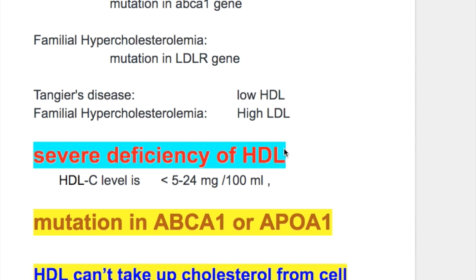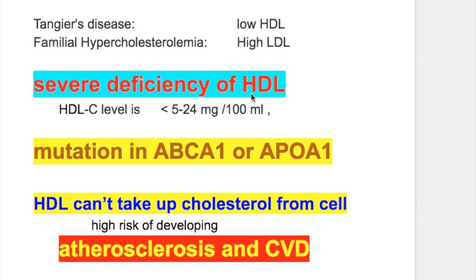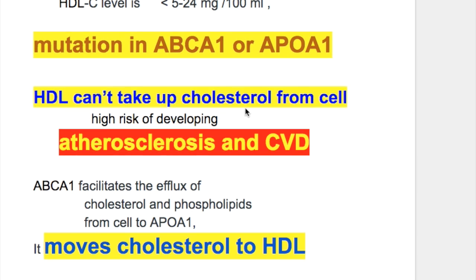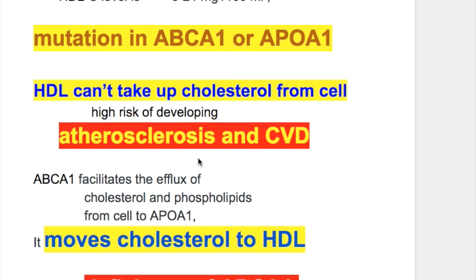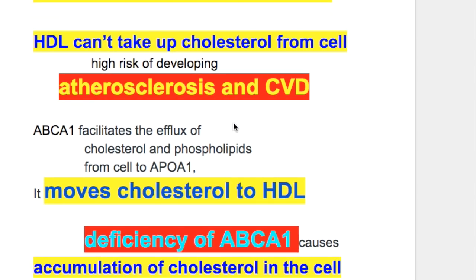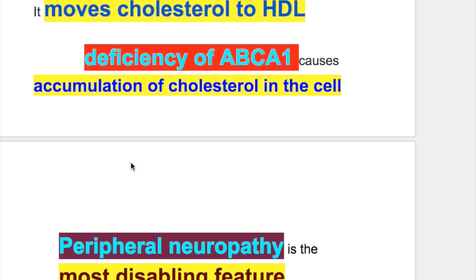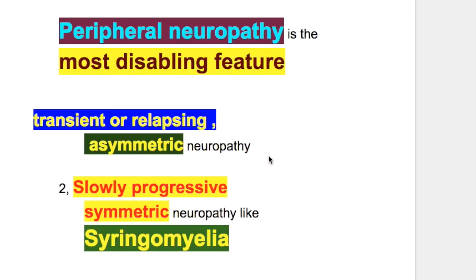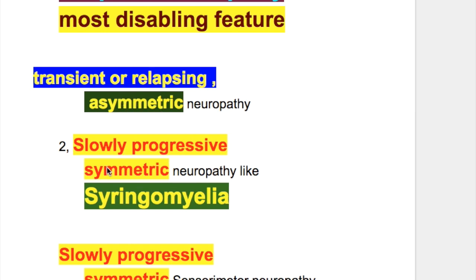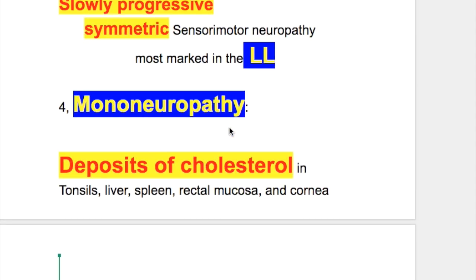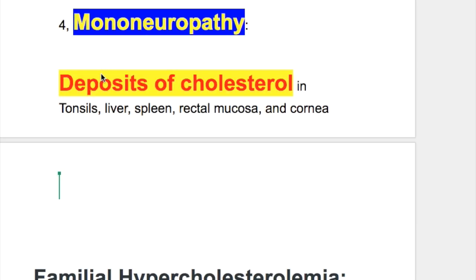Key exam points for Tangier's disease: it is a severe deficiency of HDL where the HDL level may be less than 5 mg per 100 ml in severe cases. The cause is mutation in ABCA1, which normally moves cholesterol to HDL inside the cell; deficiency causes cholesterol accumulation. Peripheral neuropathy is the most disabling feature with four types — transient or relapsing asymmetric, slowly progressive symmetric involving upper limb, slowly progressive symmetric involving lower limb, and mononeuropathy involving the oculomotor or long thoracic nerve. Non-neurological features include cholesterol deposits in tonsil, liver, and spleen with hepatosplenomegaly.